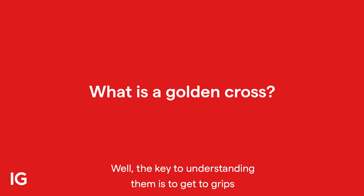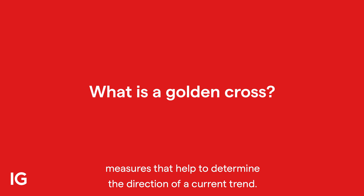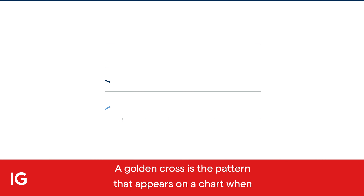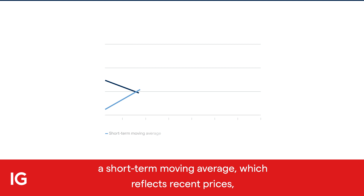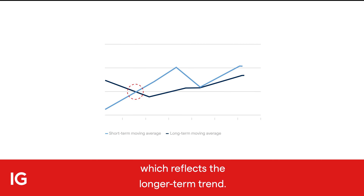Well, the key to understanding them is to get to grips with moving averages — measures that help to determine the direction of a current trend. A golden cross is the pattern that appears on a chart when a short-term moving average, which reflects recent prices, rises above a long-term moving average, which reflects the longer-term trend.